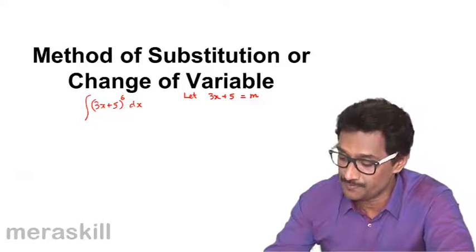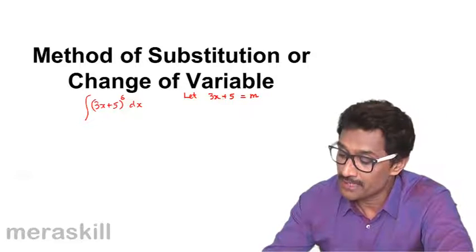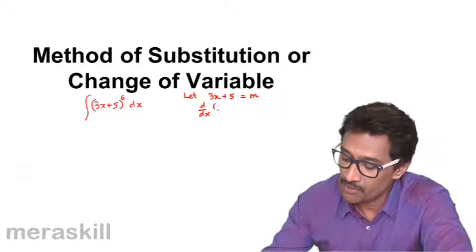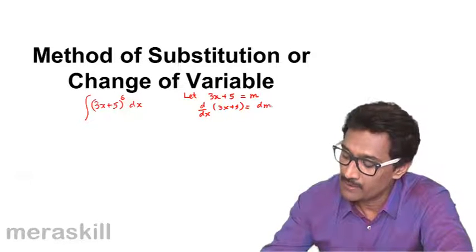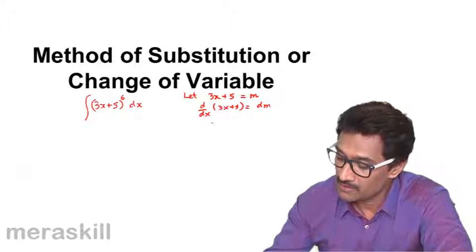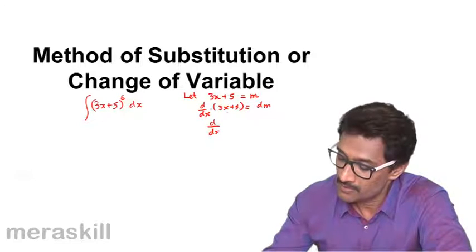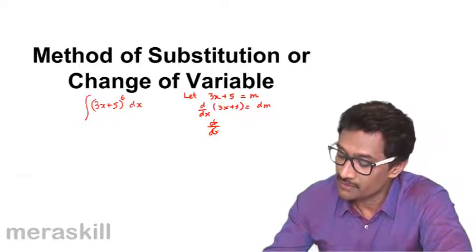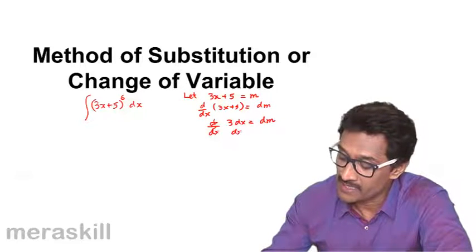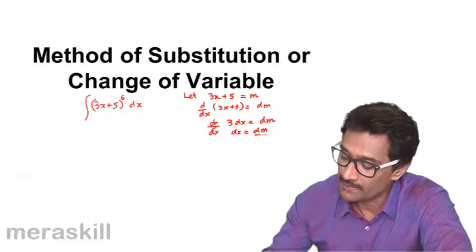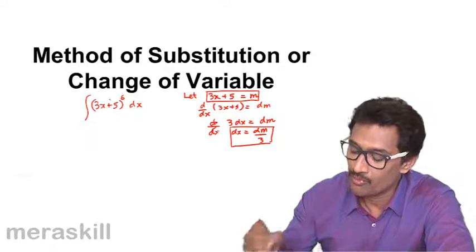Now you differentiate both sides. The derivative of 3x + 5 gives dm, so d/dx of 3x + 5 is 3dx. Therefore 3dx = dm, which means dx = dm/3. Now we are going to substitute these two into the integral.